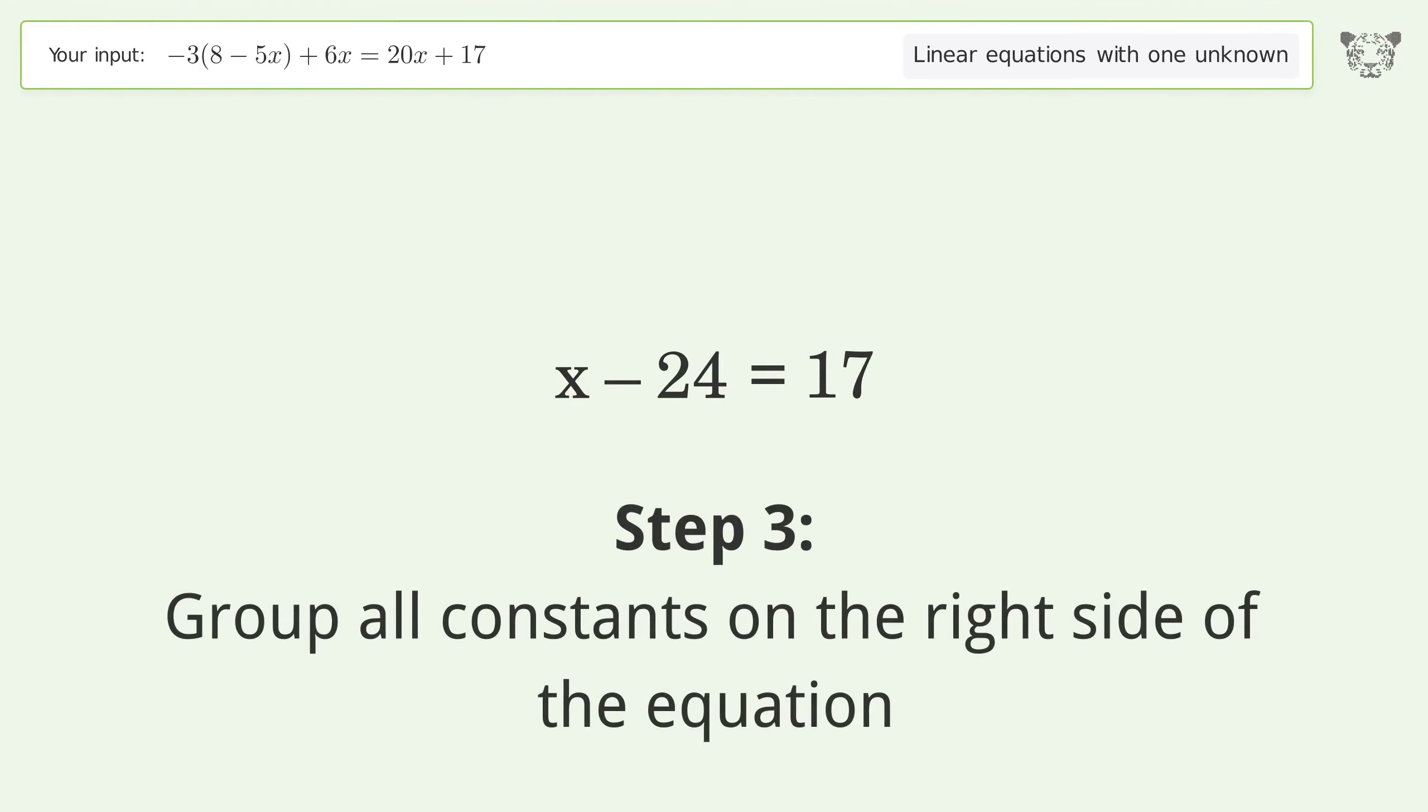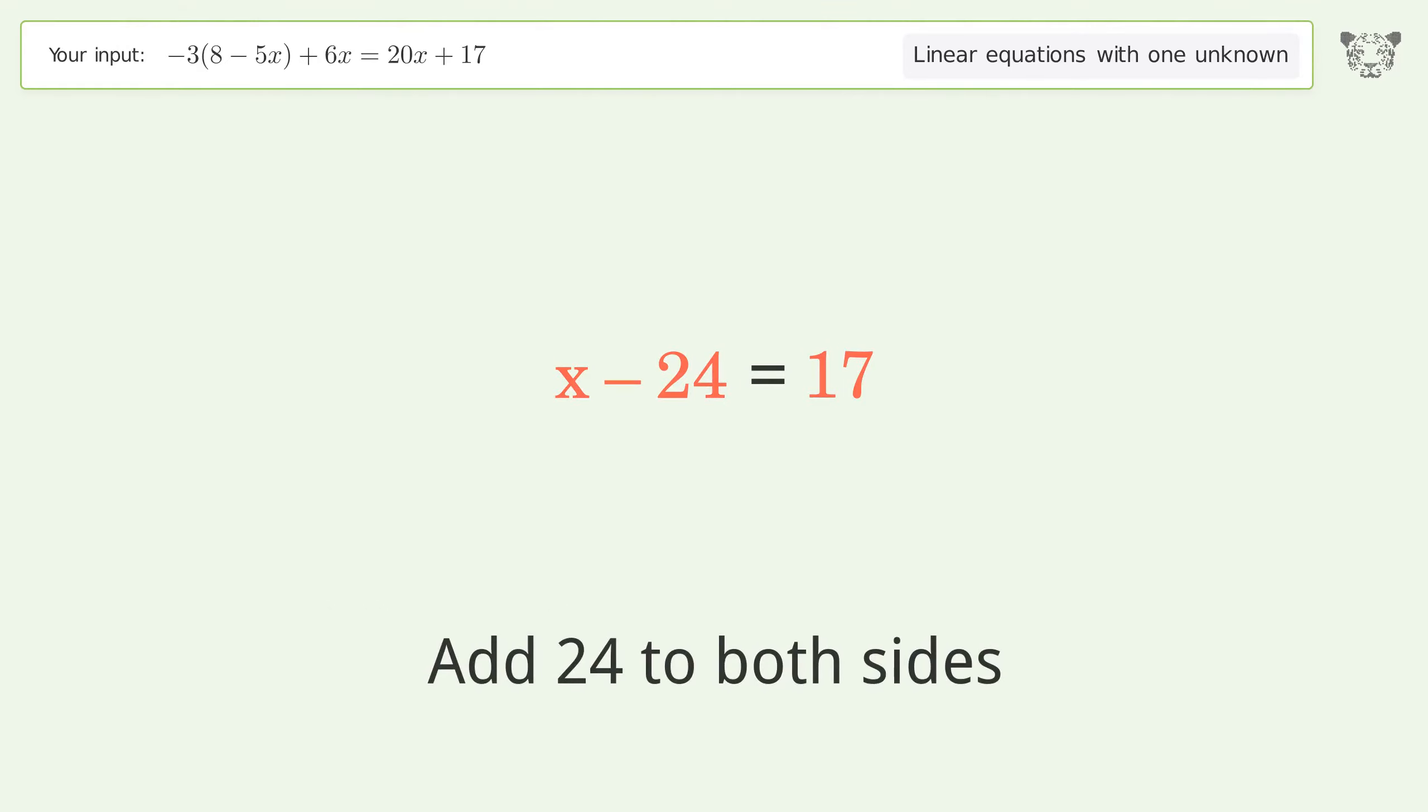Group all constants on the right side of the equation. Add 24 to both sides. Simplify the arithmetic.